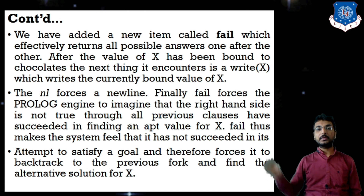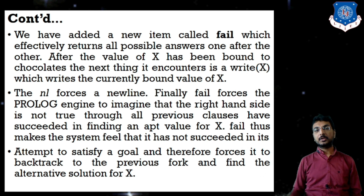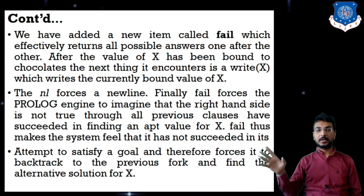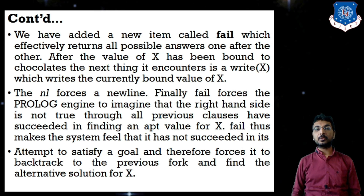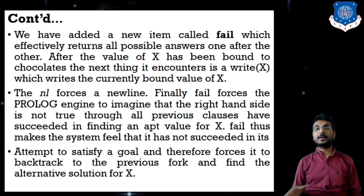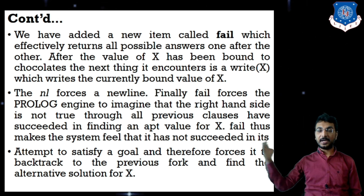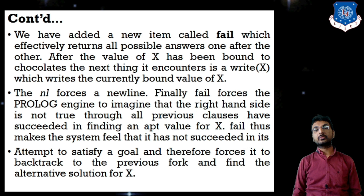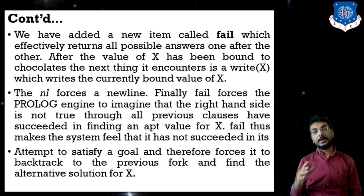After X is bound to chocolates, the write predicate writes chocolates, nl forces a new line, and fail forces the Prolog engine to imagine the right-hand side is not true — even though previous clauses succeeded in finding a value for X. Fail makes the system feel it has not succeeded, so it backtracks to the previous fork and finds the alternative solution: toffees, and then false for guard.